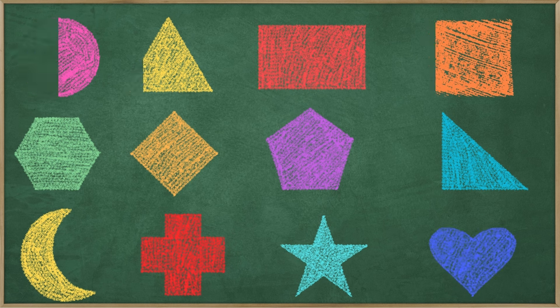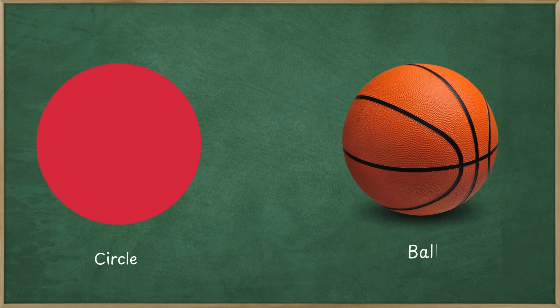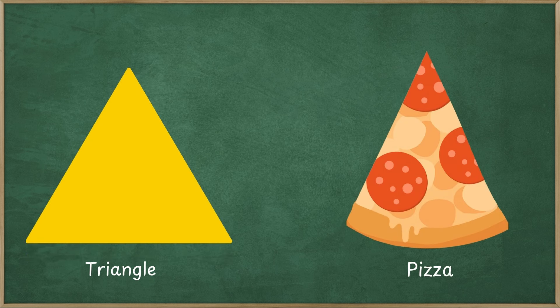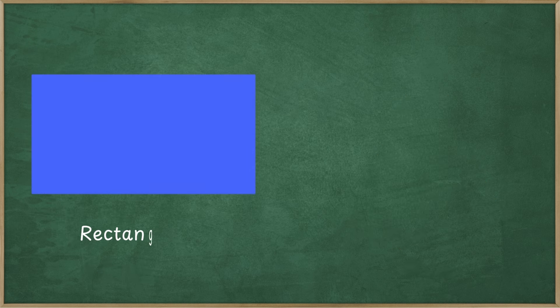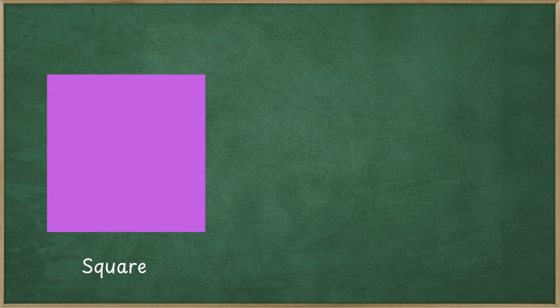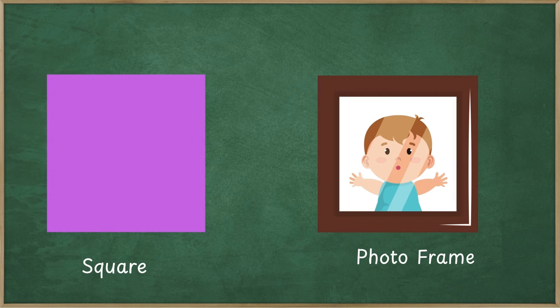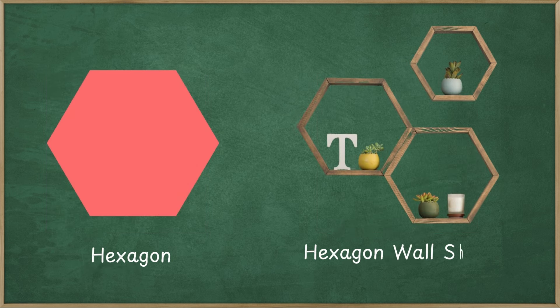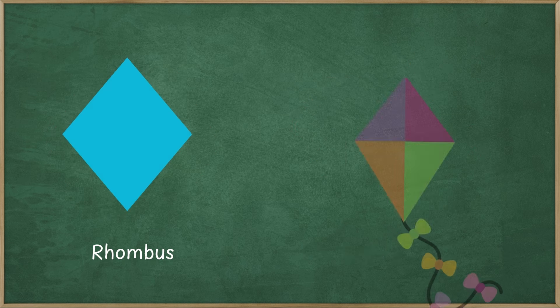Let's learn real-life examples of shapes. Circle — Ball. Triangle — Pizza. Rectangle — TV Screen. Square — Photo Frame. Hexagon — Hexagon wall shelves. Rhombus — Kite.